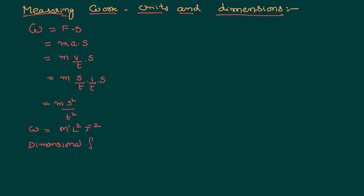So dimensional formula is a representation of the physical quantity in terms of fundamental quantities. This dimensional formula has some powers. For example, in this case, mass has a power of 1, length has a power of 2, and time has a power of minus 2. These powers are also called dimensions. Dimension is the power to which the fundamental quantity is raised to obtain a physical quantity.